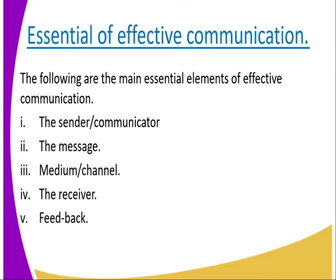When we talk about the essentials of effective communication, they include: the sender — the communicator, the originator of the information, the person who creates the original message. Then there must be the message — whatever is being relayed. There must be the medium or channel — what will be used to pass the message, whether a messenger, phone calls, or memos. Then the receiver — the person you are sending the message to. And finally, the feedback — acting upon the message you have received.